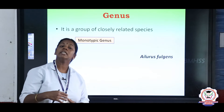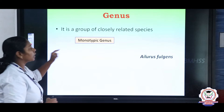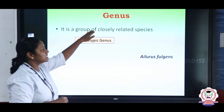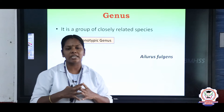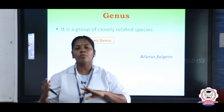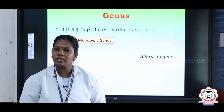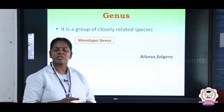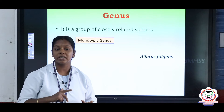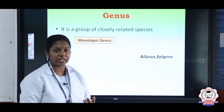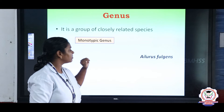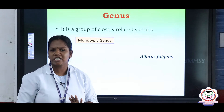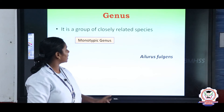Next, above species in the hierarchy is genus. The genus is a group of closely related species. Two or more species combine together to form a genus. Genus is of two types: one is monotypic and another is polytypic. Monotypic means if there is only one species in that genus, it is said to be monotypic.